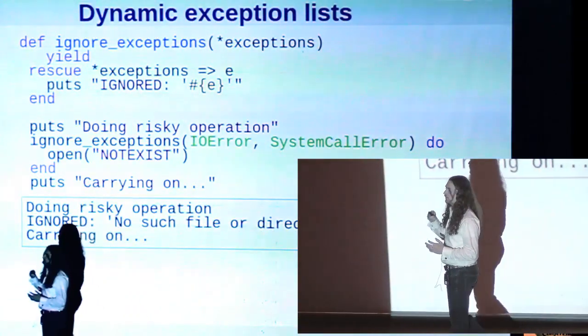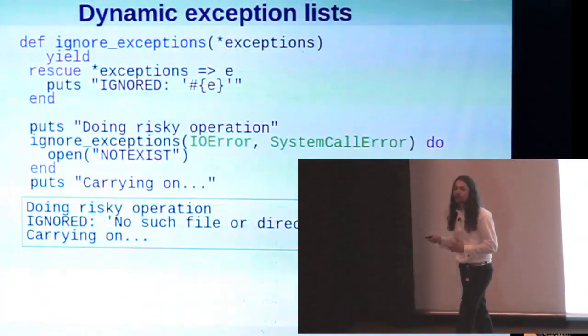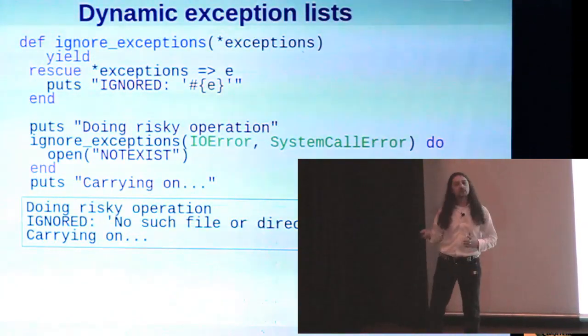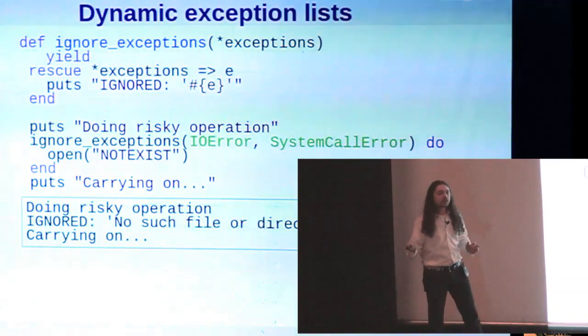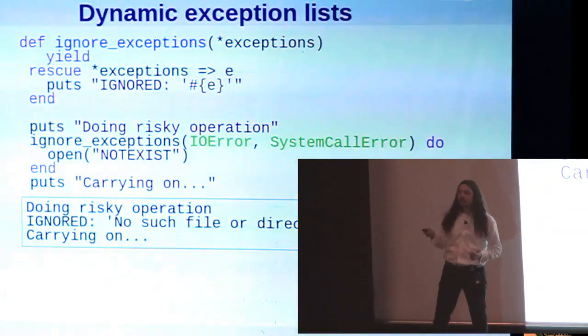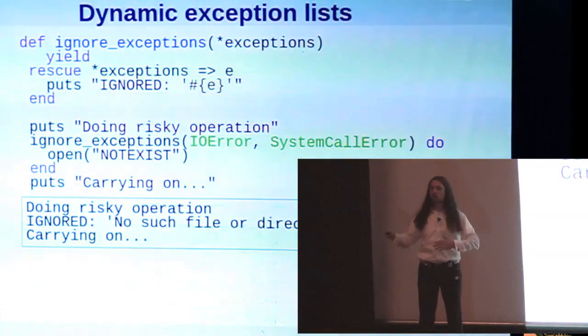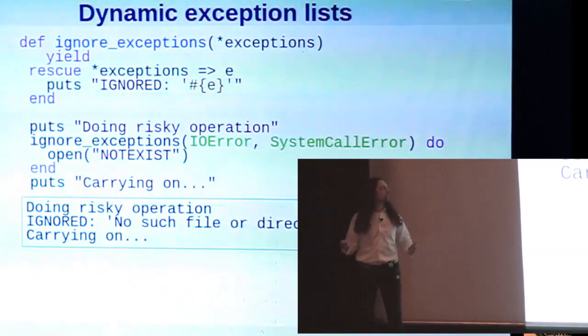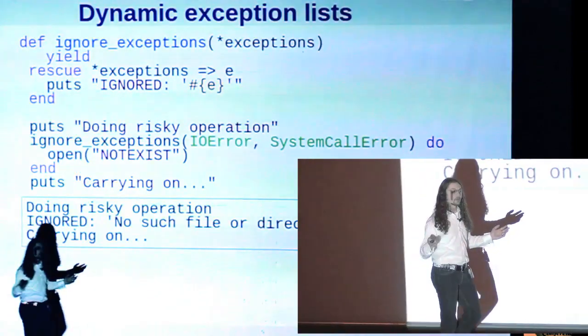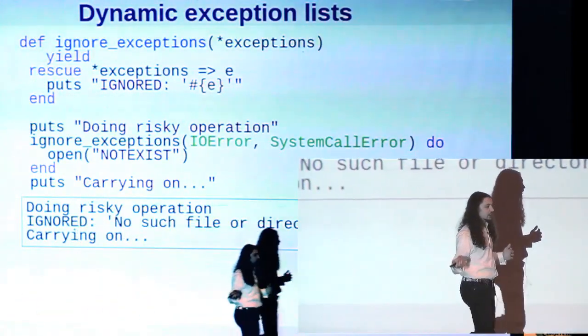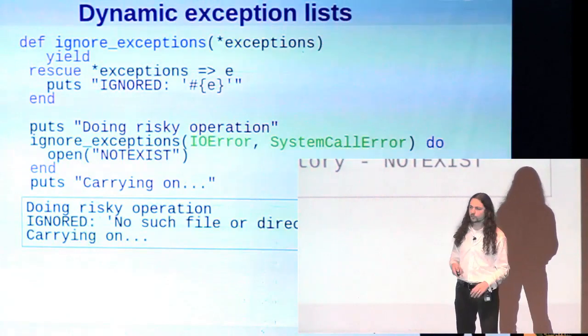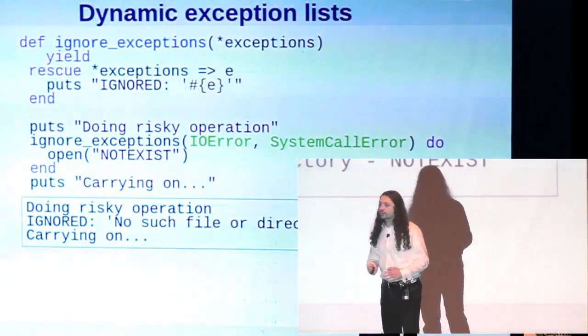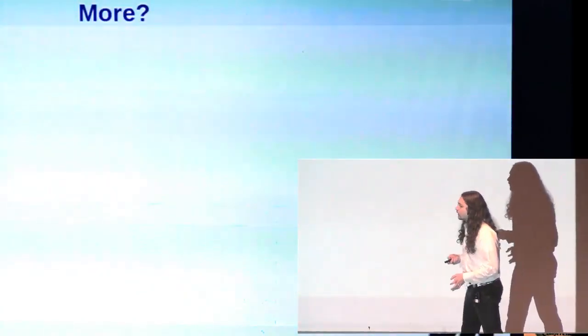And among other things, what this means is, just like with case statements, we don't have to have the list of things to match hard-coded. So if we want to, we can expand that list at runtime. So here's an example where we define an ignore exceptions method, where we pass in a list of exceptions that we want to ignore, and then we wrap the piece of code where we want to ignore those exceptions in this block. And what it does internally, it says rescue star exception. So what it's doing is it's splatting out the exception list and passing that to rescue. And you can see, you know, here is an example of using it. We say ignore IO error, ignore system call error. I don't actually recommend ignoring these errors. And they are ignored.